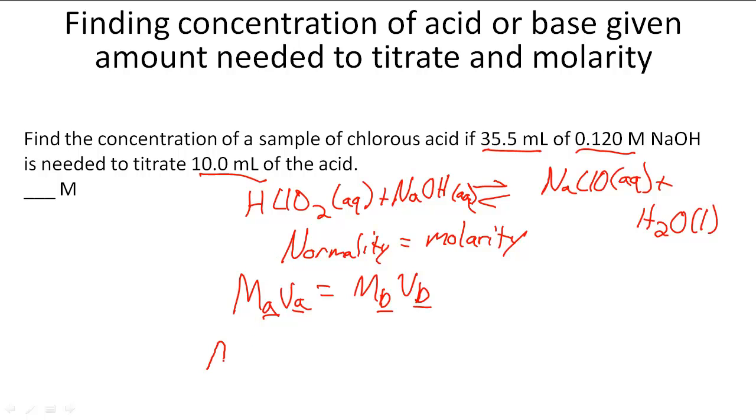So to find out MA, the molarity of the acid or the concentration of it, what we're going to do is MBVB divided by VA. And that equals for this problem 0.120 molar times 35.5 milliliters divided by 10.0 milliliters.